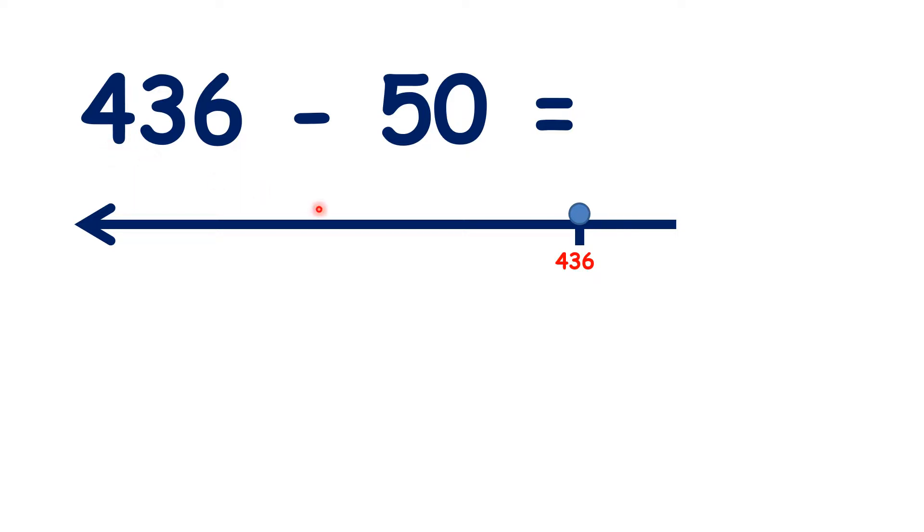So we can solve this by bridging our tens. If we subtract 30, if we take away 3 of our tens, we get to 406. If we know that 43 minus 3 is 40, we know that 436 minus 30 is 406. So because we're subtracting tens, the units digit stays the same.